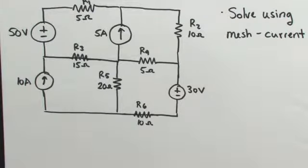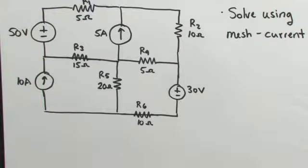Here we're going to look at a more complicated example of using the mesh current method to solve a complicated circuit. In this circuit, we're going to have a super mesh to contend with.